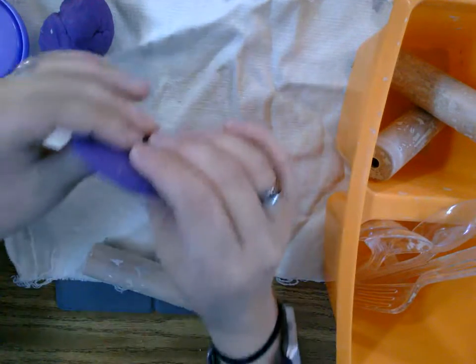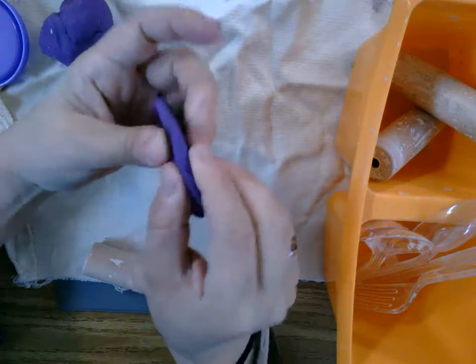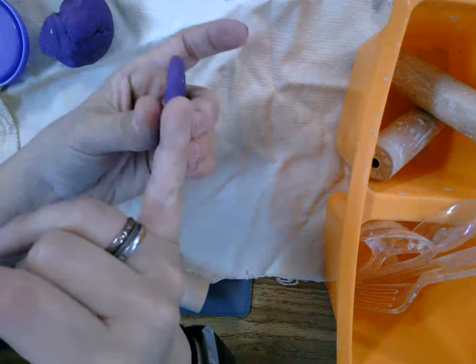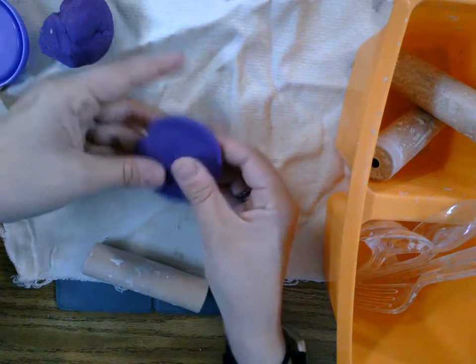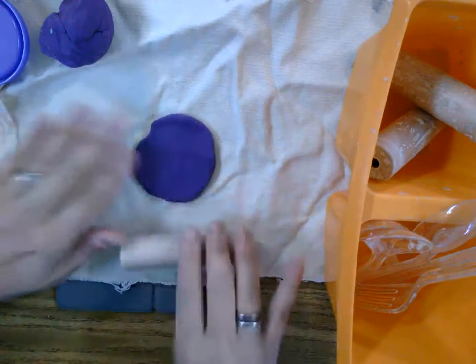You are trying to get the same thickness throughout the whole thing, and it's going to be about as thick as your pinky. Too thin and it breaks, and too thick sometimes it cracks. So that's the thickness we want. We don't want it super skinny, but we also don't want it really chunky.